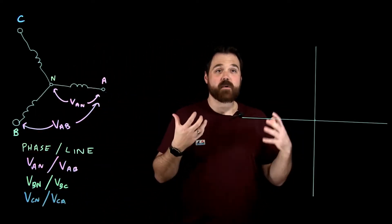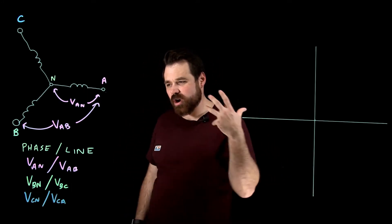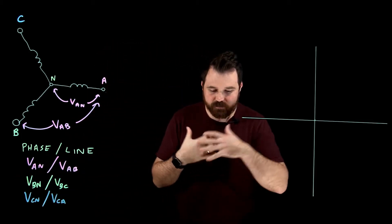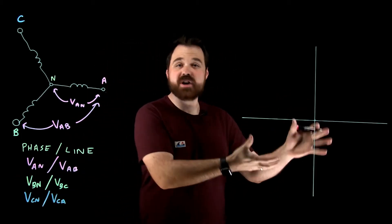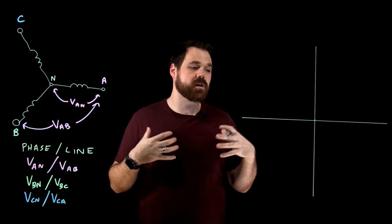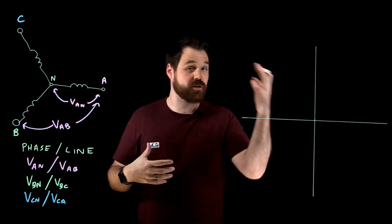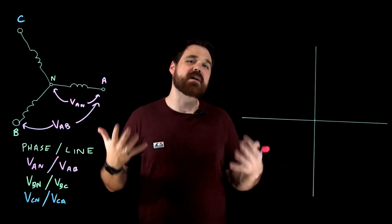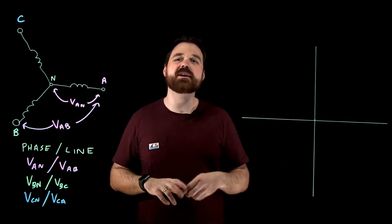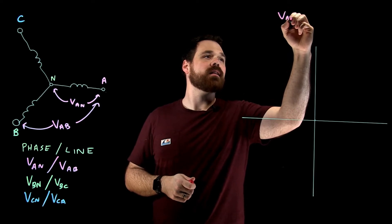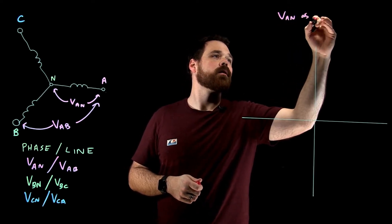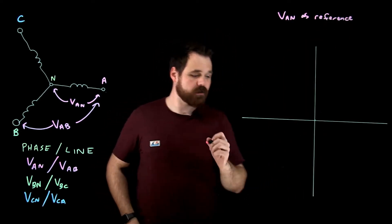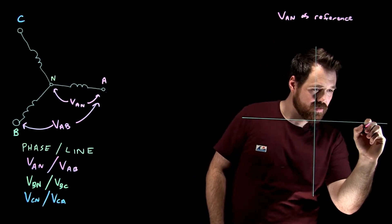So those are the voltages that we're going to get. Now, as I had mentioned, these are all 120 degrees out of phase. So let's first talk about our phase voltages. When we're plotting that onto a phasor diagram, our phase voltages are going to be 120 degrees apart because these are 120 degrees out of phase with each other. And what we typically see as a reference, not always it can be different, but in our case we're going to use V_AN as the reference, meaning we're going to base everything off of that one. So we're going to place it right here at zero degrees.